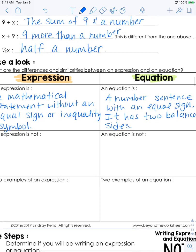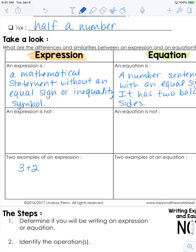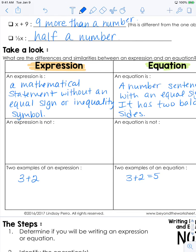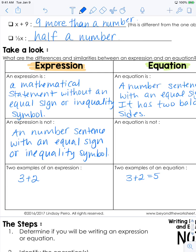It has two balanced sides. I'm going to jump down to the examples real quick. So an expression might be 3 plus 2. An equation would be 3 plus 2 equals 5, and both sides are balanced because 3 plus 2 equals 5, and then 5 is 5. Let's jump back up - an expression is not a number sentence with an equal sign or inequality symbol. If you see an equal sign or inequality symbol, it is not an expression. And an equation is not an expression or inequality.